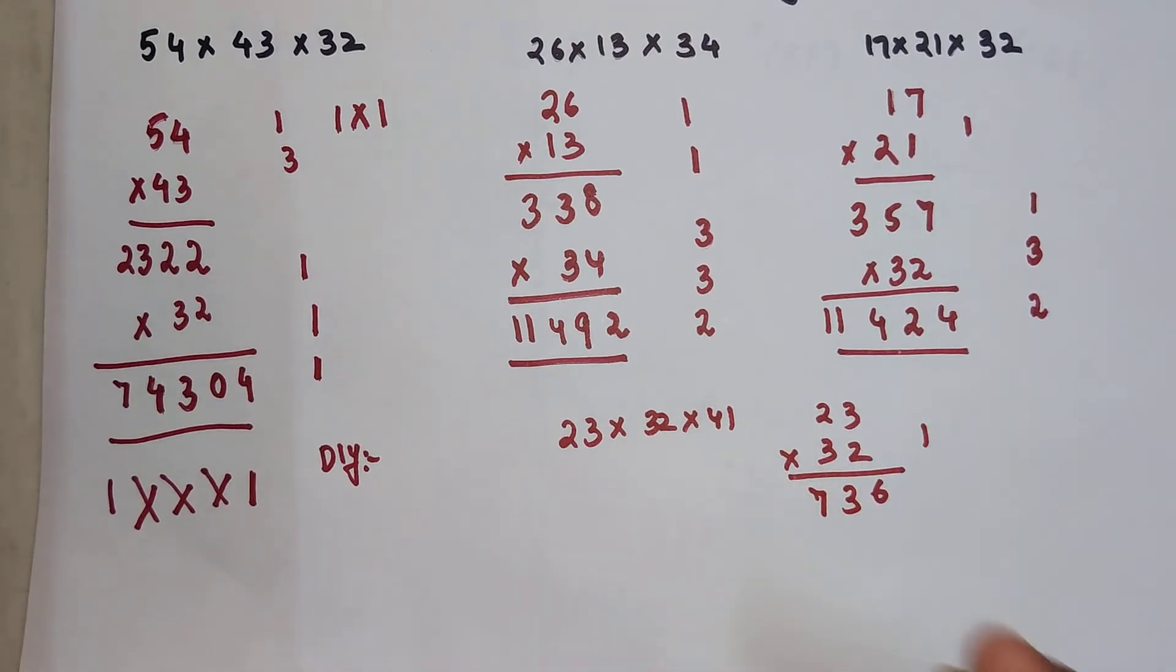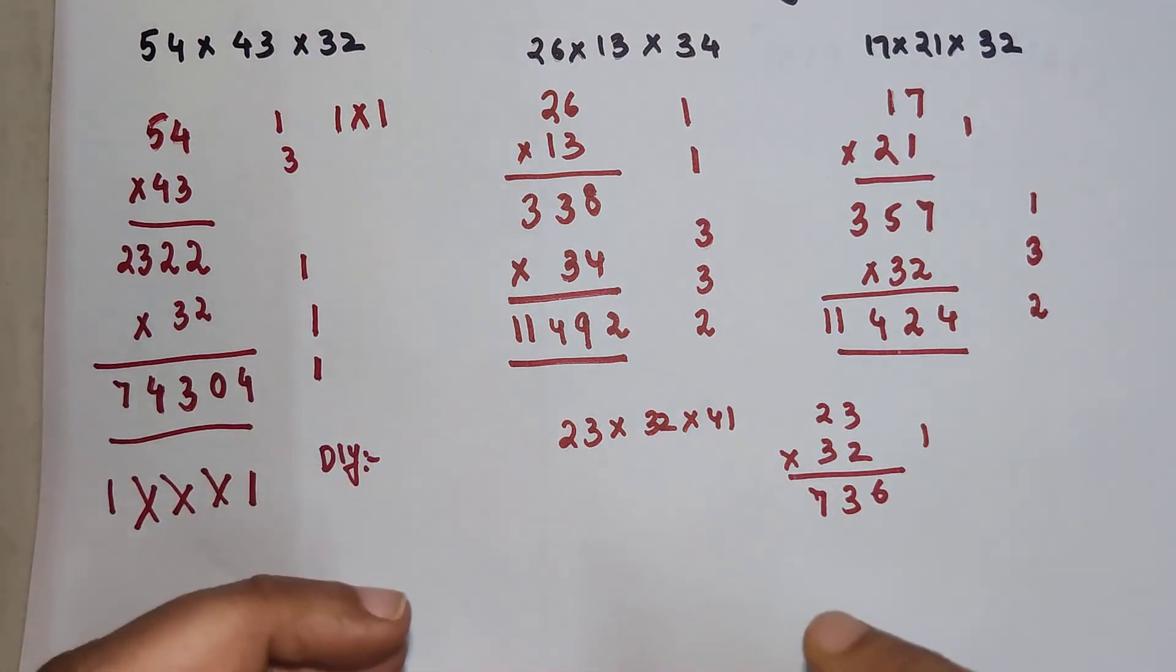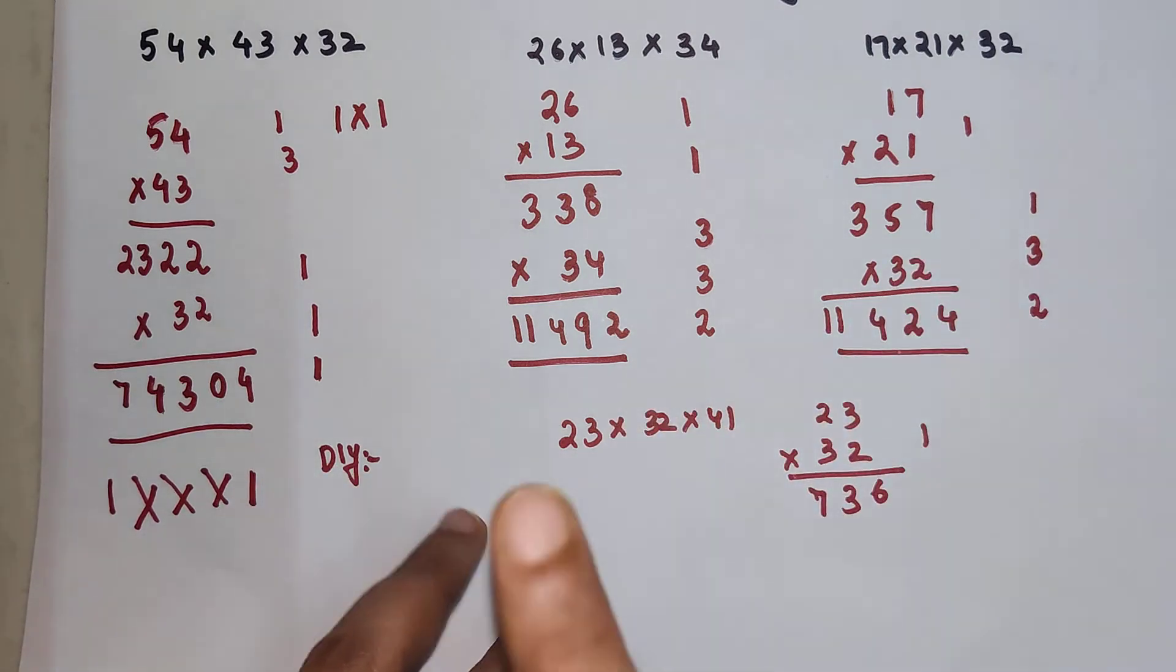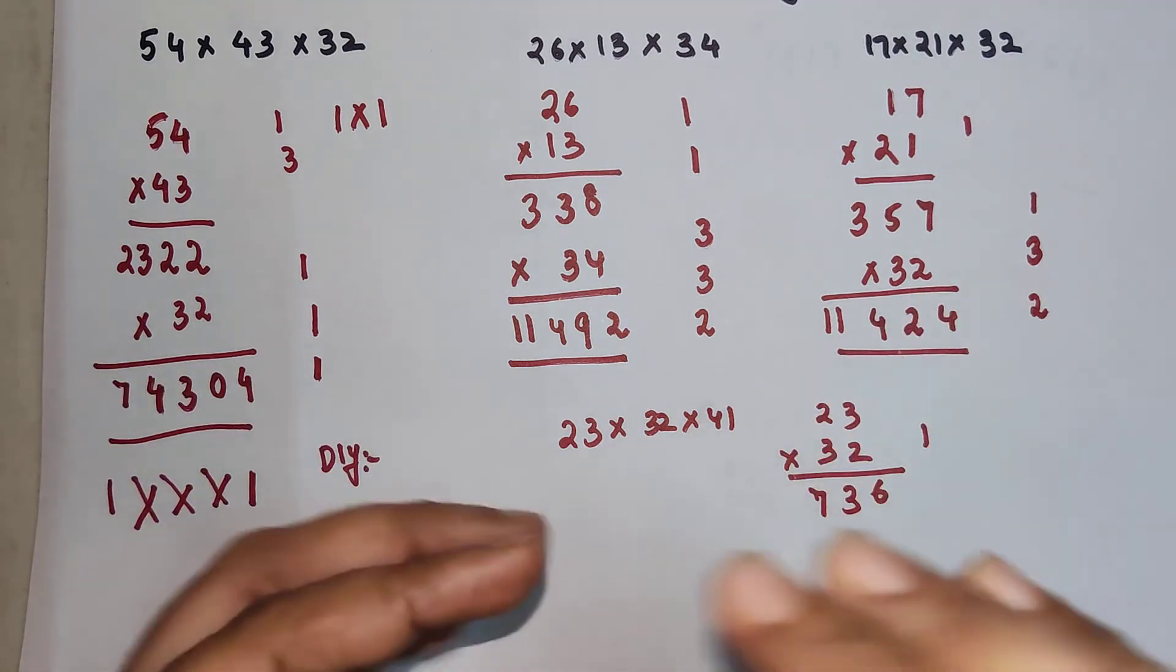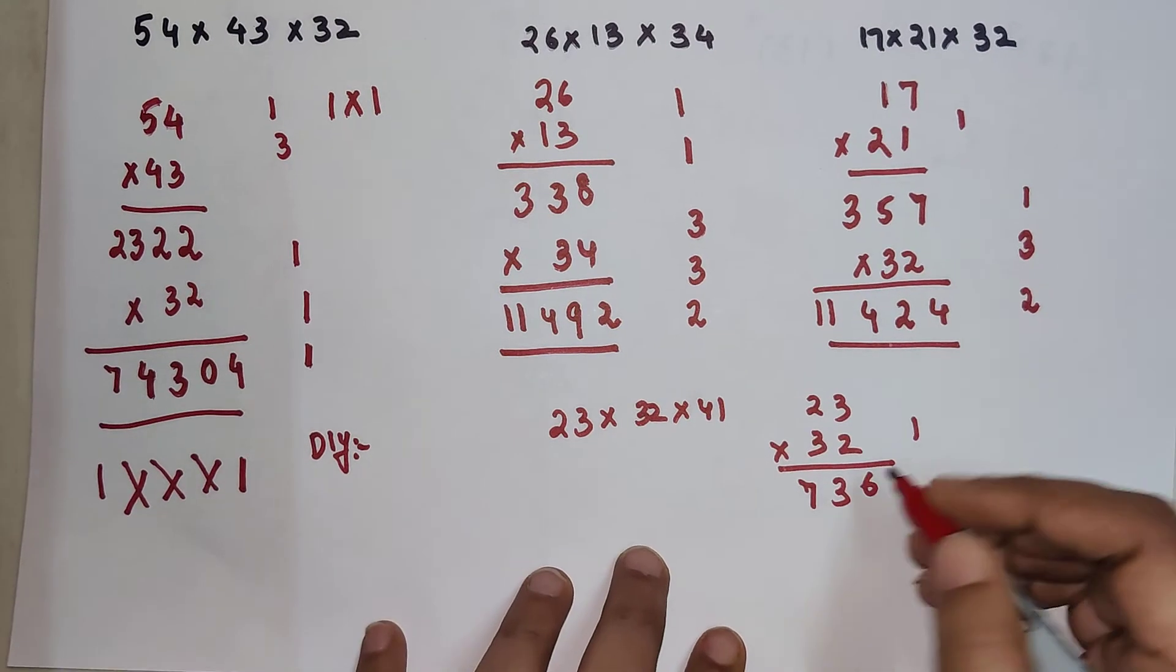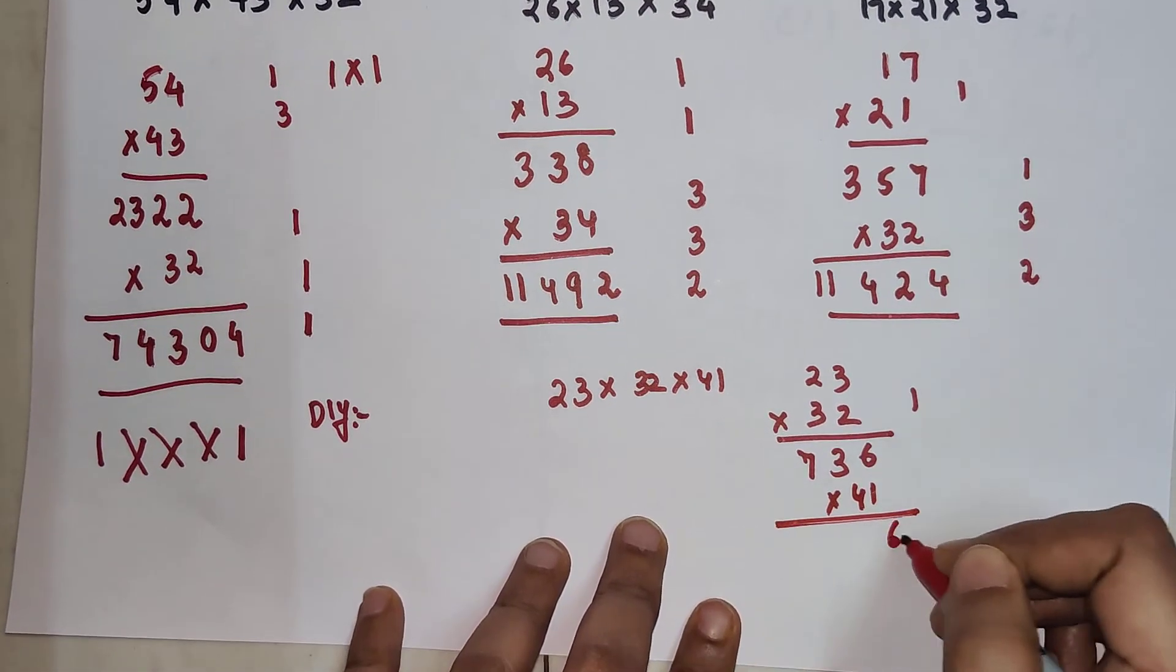Students, if you see multiplication of 2 digit into 2 digit is becoming so much easier. So I would like all of you to practice this trick because you know normally also you will come across multiplication of 2 digit into 2 digit. 2 digit into 2 digit into 2 digit is a bit rare or less probable to come. But this is very often you can come across.